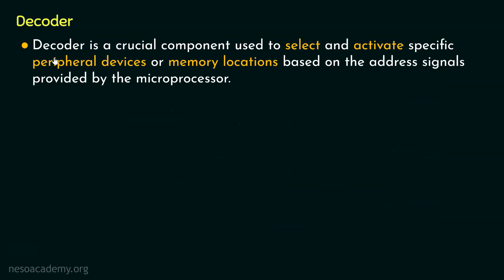Now coming to decoder, it is a crucial component which is used to select and activate specific peripheral devices or memory locations based on the address signals provided by the microprocessor. Now if you remember, when we were studying about the data transfer between the microprocessor and the memory, we learnt that when the address latch enable output line was high, it used to state that the lower order address bus is active. And due to that, in both memory write and memory read sequence, we saw specific memory location was being selected. And it is pretty evident where did we get the address signals from? Well, it was given by the microprocessor, right? So clearly, the decoder is a crucial component which is used to select and activate specific peripheral devices or memory locations based on the address signals provided by the microprocessor.